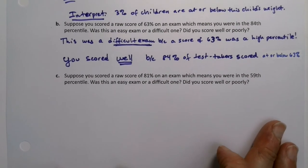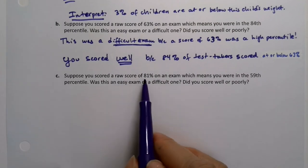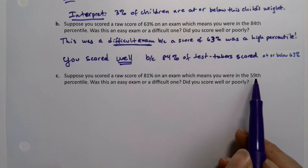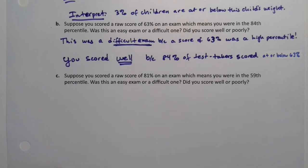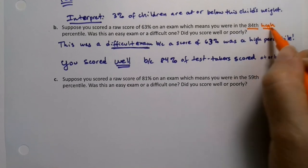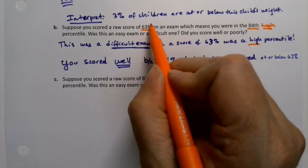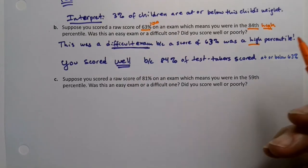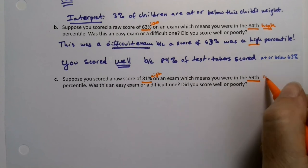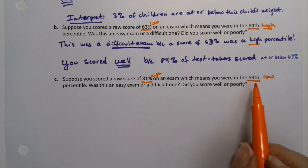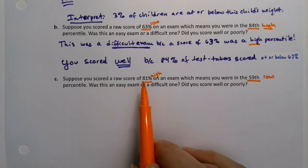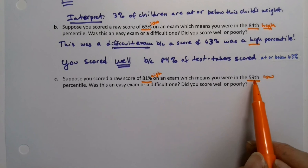What if the opposite happens? What if you scored an 81%? You might think you did really well, but it was only the 59th percentile. So if we think 84 is a high percentile and 63 is a low score, what about here? That's a high score, you think — but if they're going to count the percentile, not so much. That was an easy exam, because everybody's scoring really well, so you actually did not do that well relative to the whole.